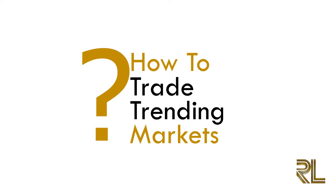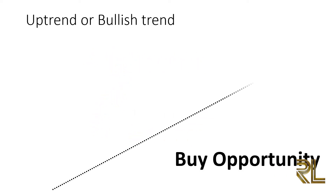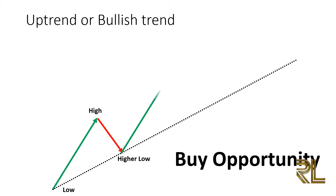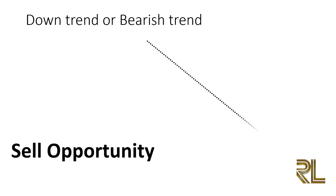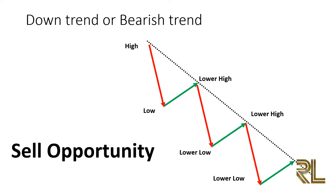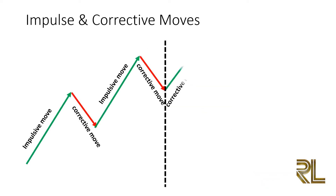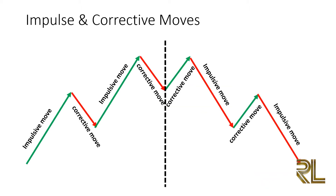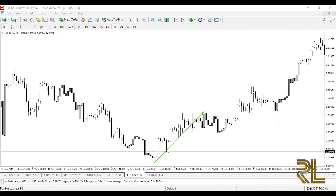If you can identify a trending market it will be easy for you to trade it. If it is a bullish market you will look for buying opportunities, because you have to trade with the trend. If the market is bearish you have to look for a selling opportunity. But the question is: what is the right time to enter a trending market? Trending markets are characterized by two important moves — the impulsive move and the retracement move. Impulsive moves have longer legs on the chart pointing toward the direction of the trend, with larger candlesticks signaling momentum.